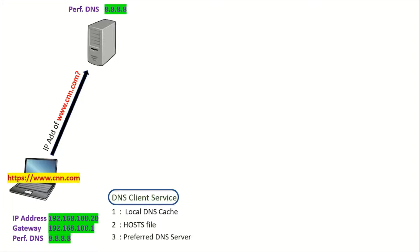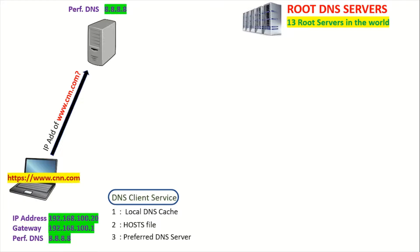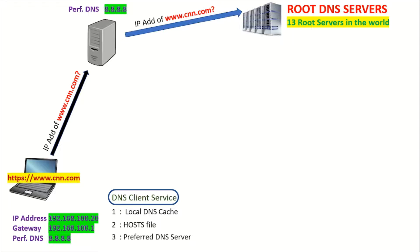The preferred DNS is not an authoritative DNS server for cnn.com, so it doesn't know the IP address of cnn.com either. At this point, there are what are called root DNS servers, also called root hints. There are only 13 root servers in the world, and they are represented by a dot in the DNS hierarchy. So the preferred DNS will contact the root DNS servers and ask for the IP address of cnn.com.